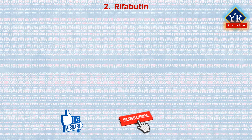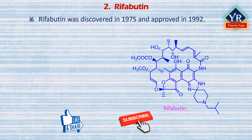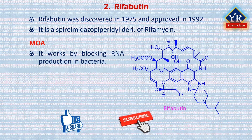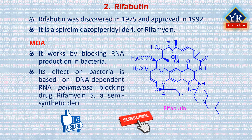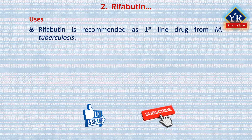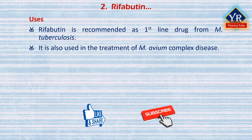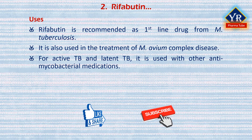The next drug is rifabutin. Rifabutin was discovered in 1975 and approved for medical use in 1992. It is a spiroimidazolpiperidyl derivative of rifamycin. Rifabutin works by blocking RNA production in bacteria. Its effect on bacteria is based on DNA-dependent RNA polymerase blocking, as a semi-synthetic derivative of rifamycin S. Rifabutin is primarily a bactericidal antibiotic and is now recommended as a primary-line drug for mycobacterium tuberculosis. It is also used in the treatment of mycobacterium avium complex disease, a bacterial infection most commonly encountered in people with late-stage AIDS. For active and latent tuberculosis, it is used with other anti-mycobacterial medications.